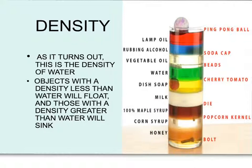When we place an object within this tube, the object will rest within its density range. The cherry tomato has a density less than all of the fluids below it, but greater than all of the liquids above it. A bolt has a density greater than all of the fluids, where the ping pong ball has a density less than all of the fluids.